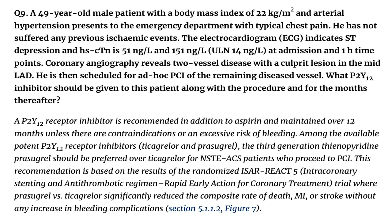A P2Y12 receptor inhibitor is recommended in addition to aspirin and maintained over 12 months unless there are contraindications or an excessive risk of bleeding. Among the available potent P2Y12 receptor inhibitors — ticagrelor and prasugrel — the third-generation thienopyridine prasugrel should be preferred over ticagrelor for NSTEACS patients who proceed to PCI. This recommendation is based on the results of the randomized ISAR-REACT 5 (Intracoronary Stenting and Antithrombotic Regimen: Rapid Early Action for Coronary Treatment) trial, where prasugrel vs. ticagrelor significantly reduced the composite rate of death, MI, or stroke without any increase in bleeding complications. Section 5.1.1.2, Figure 7.